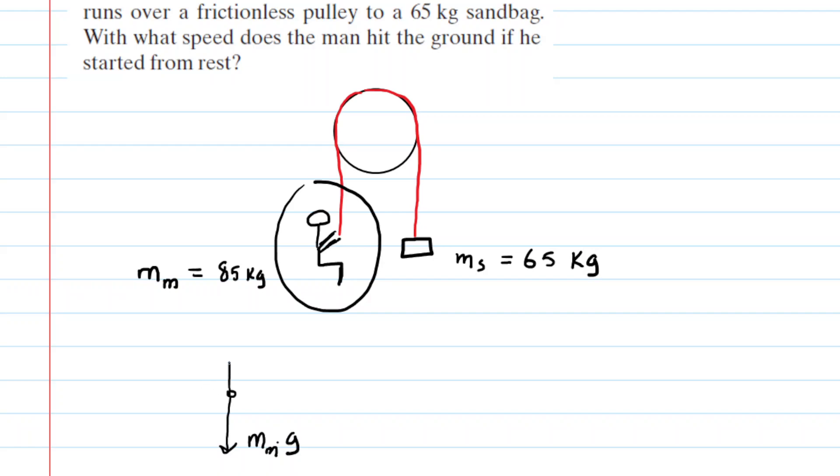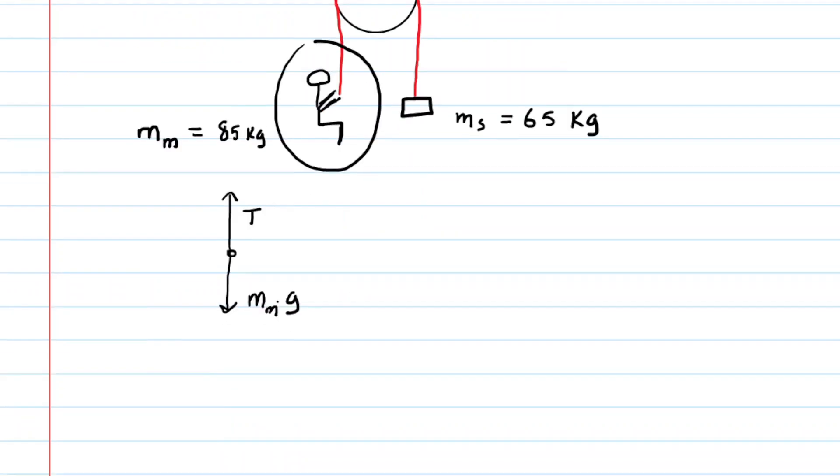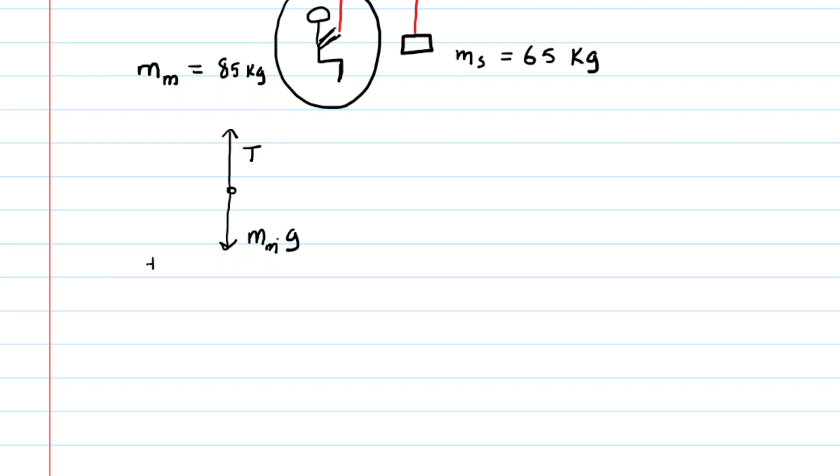And then we have an upward force, which would be the tension in the rope that's wrapped around the pulley, so we'll call that T. Now, the question notes that he is lowering himself, so what we're going to do is assign a positive direction to the downward direction, and then we will make the upward direction negative. Now, with that convention in mind, we can apply Newton's second law. We know that the sum of the forces in the y direction would equal the mass of the man multiplied by the man's acceleration.